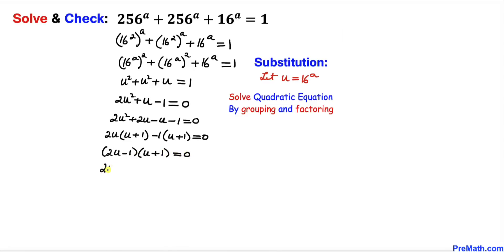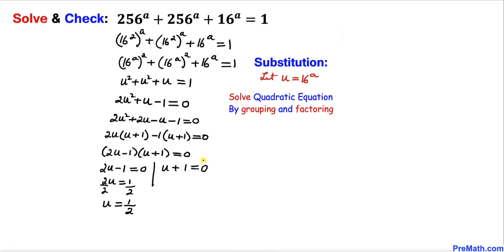Separating the factors: 2u - 1 = 0 gives u = 1/2, and u + 1 = 0 gives u = -1.